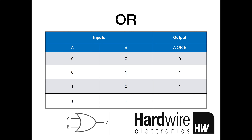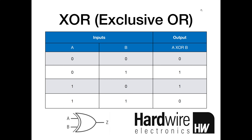If we want the output to be on when A or B is on but off when they're both on, then we use an XOR, which stands for exclusive OR. The output will only be on when A or B are high, but not both. When A and B are both off, the output is off. When one input is on and the other is off, the output is on. But when A and B are both on, an XOR will evaluate to false and the output will be off.